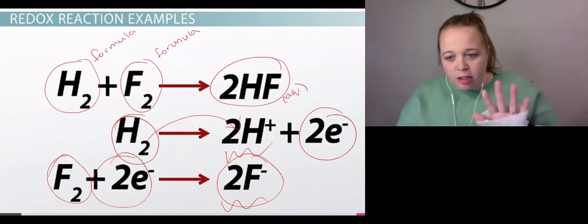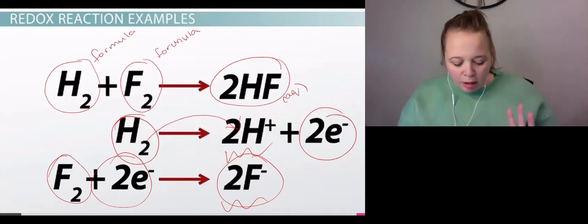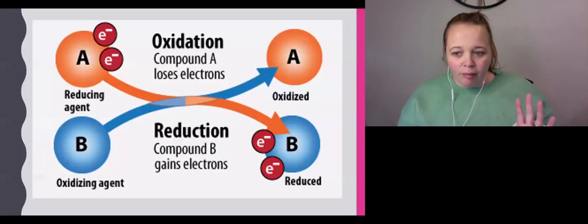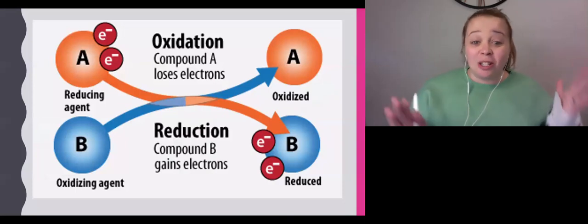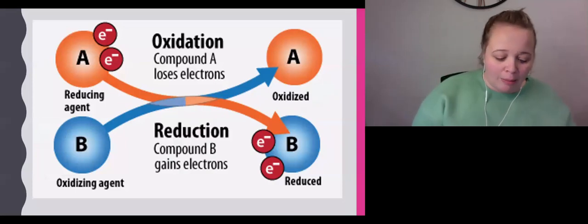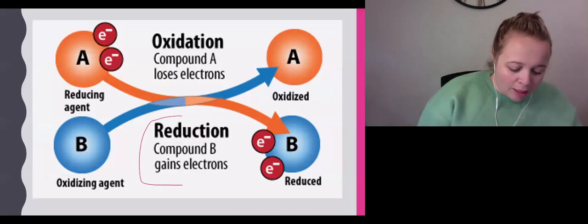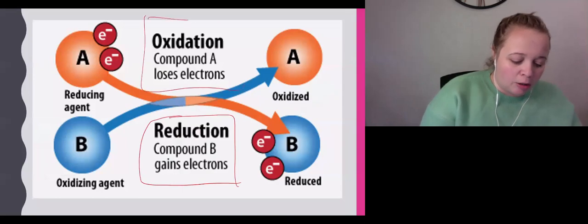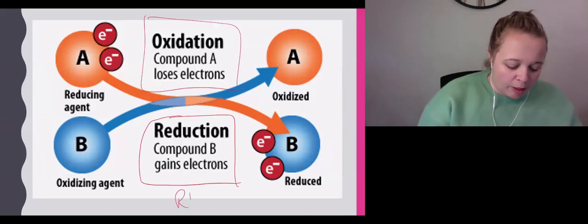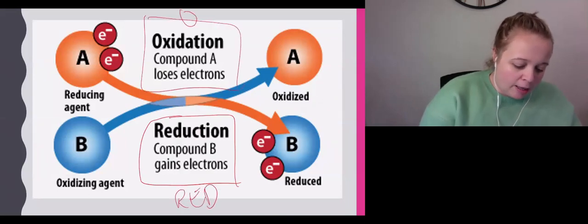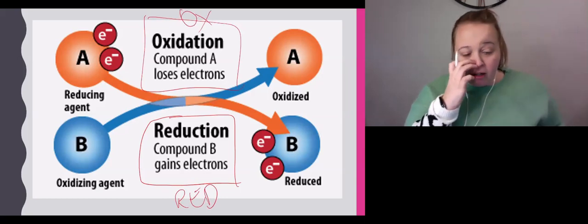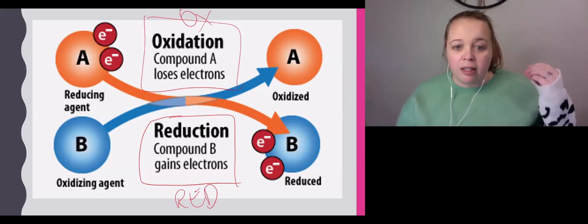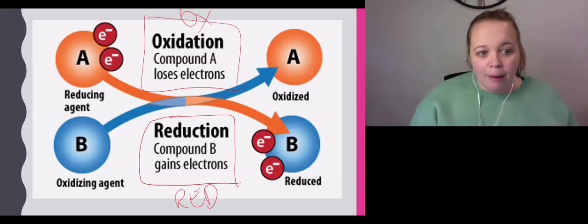Redox has to do with loss or gain—the transfer of electrons. We call it redox because there are two reactions that always happen simultaneously: one is reduction, the red bit of redox, and the other is oxidation, the ox. Redox comes from reduction and oxidation happening at once.